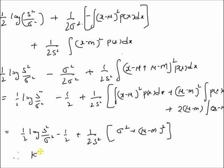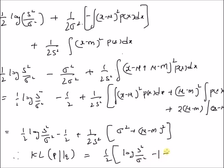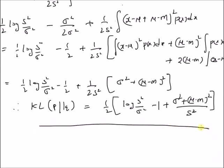Therefore, the Kullback-Leibler divergence between the probability distributions P and Q is equal to 1 by 2 times the logarithm of s square by sigma square, minus 1, plus sigma square plus mu minus m whole square, divided by s square. This is the Kullback-Leibler divergence between two normal distributions with different means and variances. Thanks for watching.